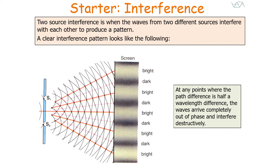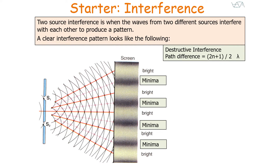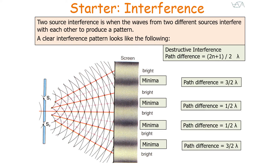At any point where the path difference is half a wavelength between the two waves, the waves arrive completely out of phase and therefore interfere destructively. These points are called minima. At a minima, the path difference is half a number of wavelengths, and the phase difference is pi radians. For destructive interference, the path difference is (2n + 1)/2 times lambda. The two inner minima have a path difference of half lambda, while the outer two minima have a path difference of 3/2 lambda.